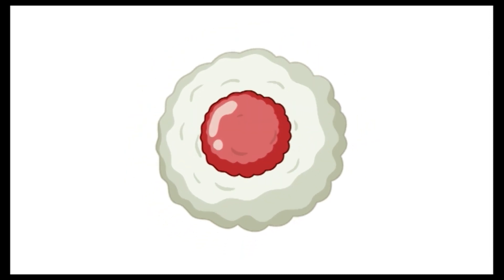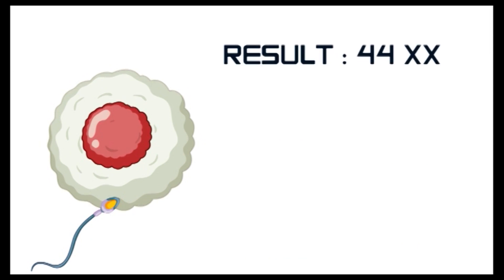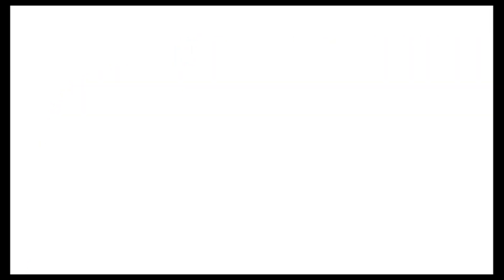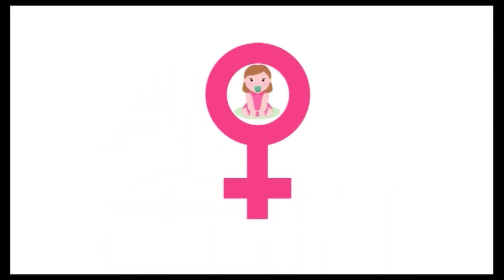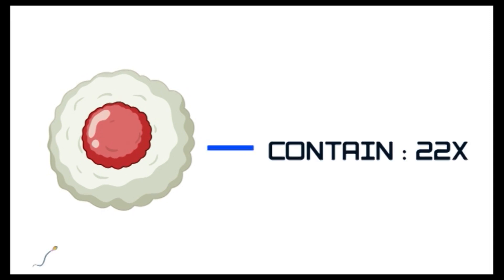Egg has 22X. If it is fused by a sperm of 22X, then the result is 44XX, so the gender of the baby is female. If it is fused with a 22Y sperm, then the result is 44XY, hence the gender of the baby is male.